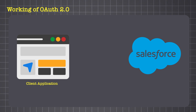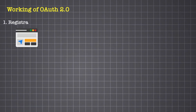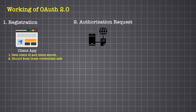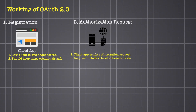Here's what happens behind the scenes. First, the app — known as a client — must register with Salesforce's authorization server to receive a client ID and client secret. These are like the app's username and password, used to identify itself during requests. When the user tries to connect their Salesforce account, the client app sends an authorization request to the authorization server. This includes the client ID, the redirect URL where Salesforce should send the response, and the scope — the kind of access the app is requesting.